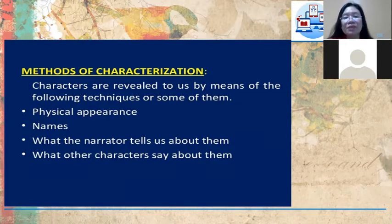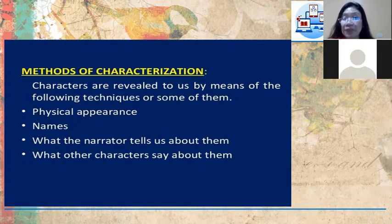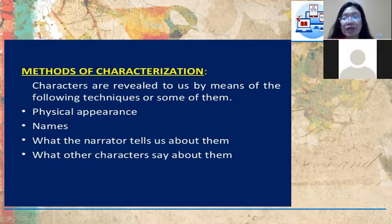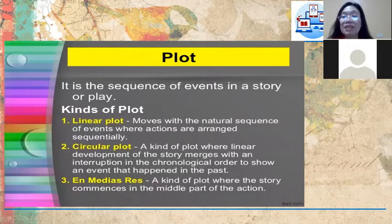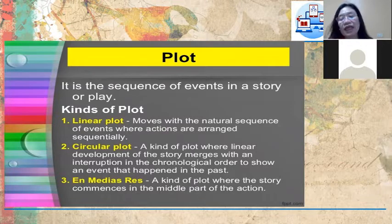Characters are revealed to us by means of the following techniques: physical appearance, names of the characters, what the narrator tells about them, and what other characters say about them. Another element is the plot — the sequence of events in a story or play.